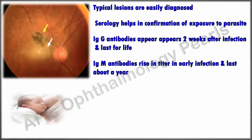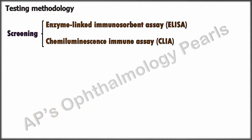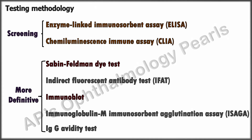A negative IgG antibody titer rules out toxoplasmosis. IgM antibodies rise in early infection and last about a year. Since IgM antibodies do not cross the placenta, their presence in a newborn confirms congenital infection. Detection of toxoplasma-specific IgA antibodies is more sensitive than IgM in congenitally infected babies. In adults and children greater than 12 months, IgM presence indicates disease acquired within the past year. Common screening tests include ELISA and chemiluminescence immunoassay.